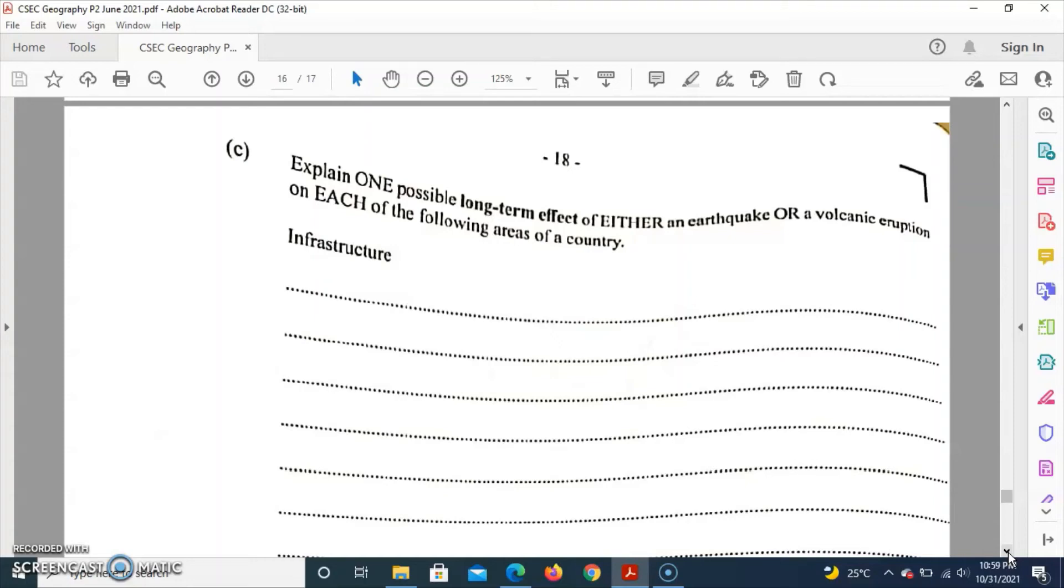For an earthquake, a long-term infrastructural effect is that the earthquake can cause damages to infrastructure such as roads and buildings, and this can basically lead to the displacement or separation of settlements. Houses can be destroyed which can basically lead to homelessness.